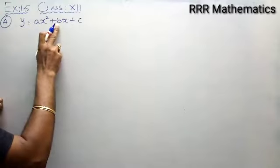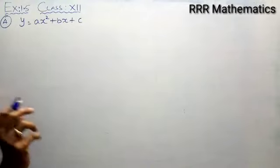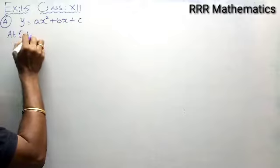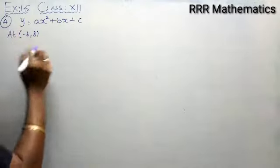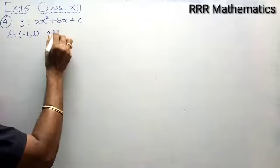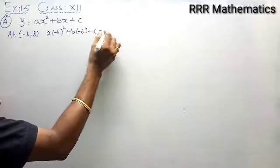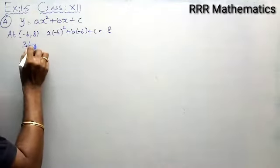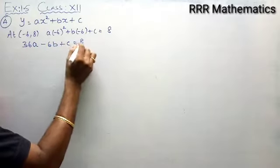y = ax² + bx + c is given, and it passes through 3 points. The very first point, (−6, 8). Substitute x = −6, y = 8. So it will be a(−6)² + b(−6) + c = 8. That is, 36a − 6b + c = 8. I will take this as equation 1.